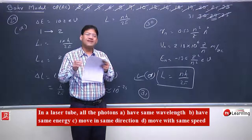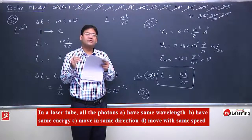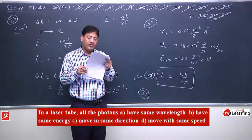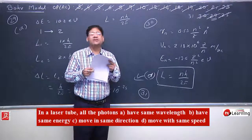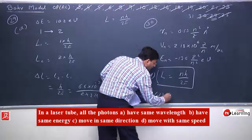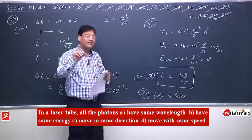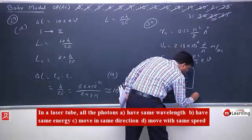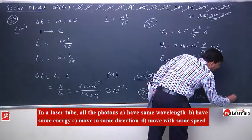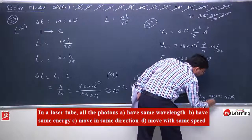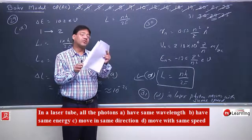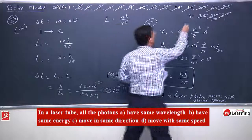A and B will either both be correct or both be wrong — same wavelength means same energy, and same energy means same wavelength; these two cannot differ. In a laser tube, wavelength and energy of photons can differ. Move in same direction — this is also not strictly true; photons can be slightly scattered. Move with same speed — for photons, speed is always the same; it can never differ whether in a laser or anywhere else.